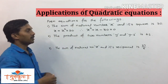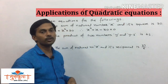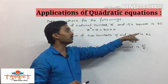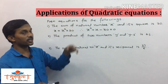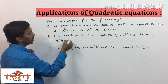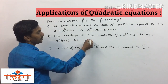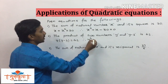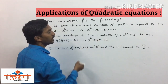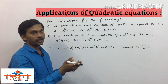Second example: the product of two numbers y and y minus 3 is 42. We write y multiplied by (y - 3) equals 42. Expanding: y² - 3y = 42. We then transfer 42 to the left side to write it in standard form.